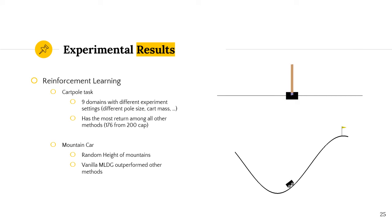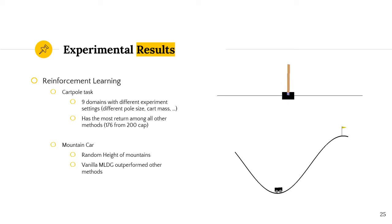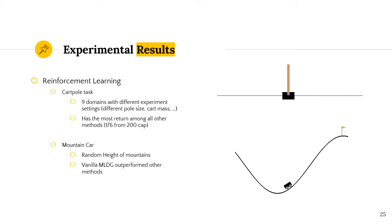For the reinforcement learning experiments, there were two tasks. The first was the cartpole task, where a cart tries to hold a pole vertically, with nine domains defined by different experiment settings such as different pole lengths and cart masses. MLDG achieved the highest return among all other reinforcement learning methods. The second experiment was the mountain car task, where a car between two hills must reach the peak on the right, with different mountain heights used to generate different domains. Here, the simple MLDG variant, not the two alternatives, outperformed all other methods.